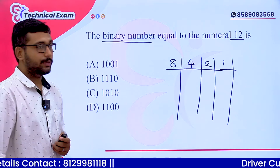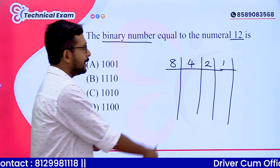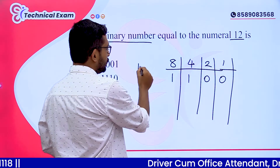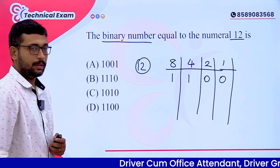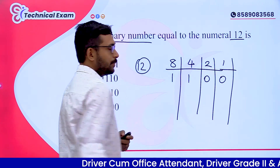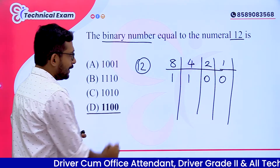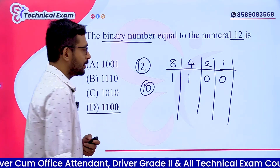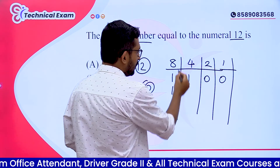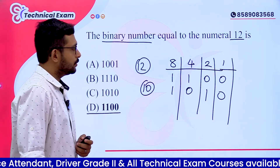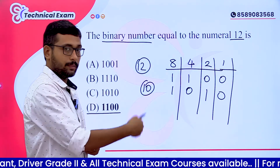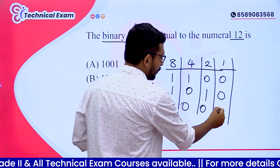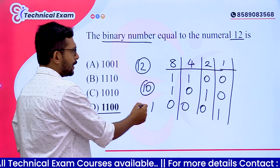To write 12 in binary: 8 + 4 = 12, so the binary representation is 1100. That is Option D. For the number 10 in binary: 8 + 2 = 10, so we write 1010.